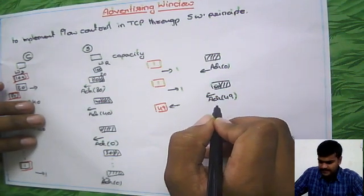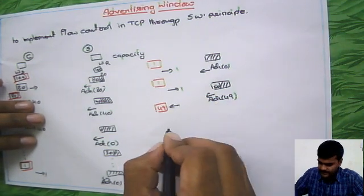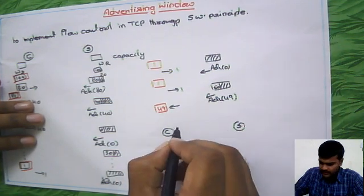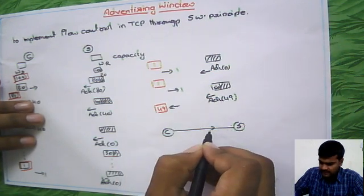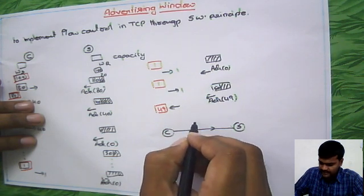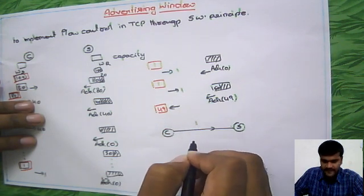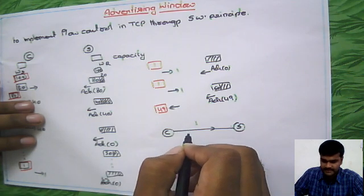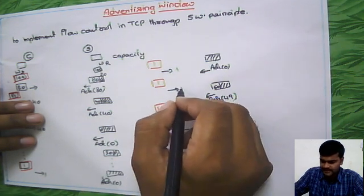But here, what we have to observe is this is the client and the server. What we are transmitting here, while transmitting, we are transmitting one packet of data, means simply we are transmitting here one byte. Simply, this setting is one byte.